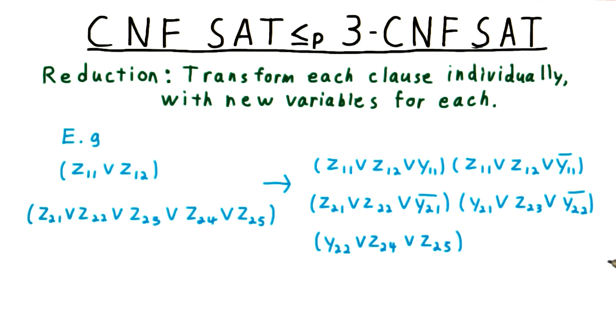Since all these sets of variables are disjoint, we can assign them independently of each other and apply all the same arguments as we did to individual clauses. That's how CNF can be reduced to 3-CNF.